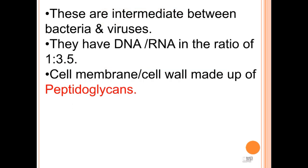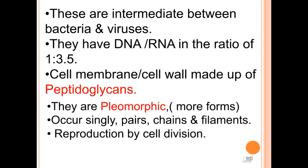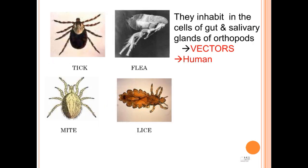They have DNA and RNA in the ratio of 1 to 3.5. The cell membrane or cell wall is made up of peptidoglycans. They are pleomorphic. They occur singly or in pairs, in chains or in filaments. The reproduction is by cell division. They inhabit the cells of the gut and salivary glands of arthropods, which act as vectors and transmit to the human being.